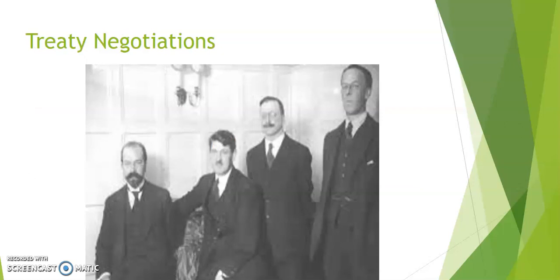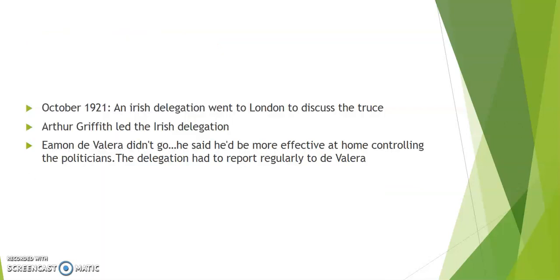Here are the treaty negotiators including Michael Collins and Arthur Griffith. On the 11th of July 1921 a truce was called between the British and the IRA. In October a delegation led by Arthur Griffith went to London to negotiate the treaty with Britain. However the President, and arguably its most experienced politician and negotiator, Eamon de Valera, decided not to go, automatically weakening the delegation. He felt he should remain in Dublin so that the delegation could consult him before agreeing anything.